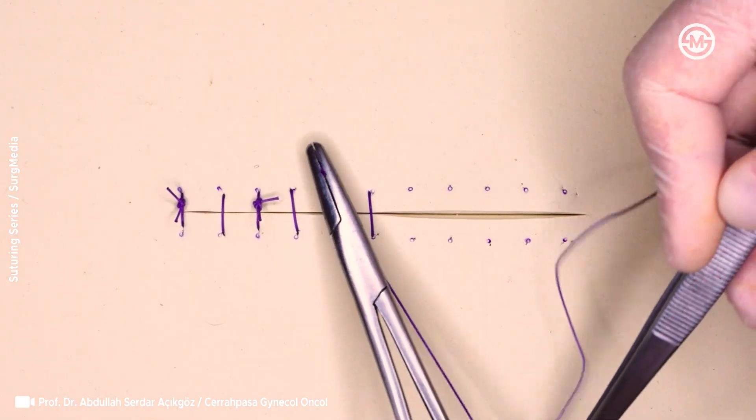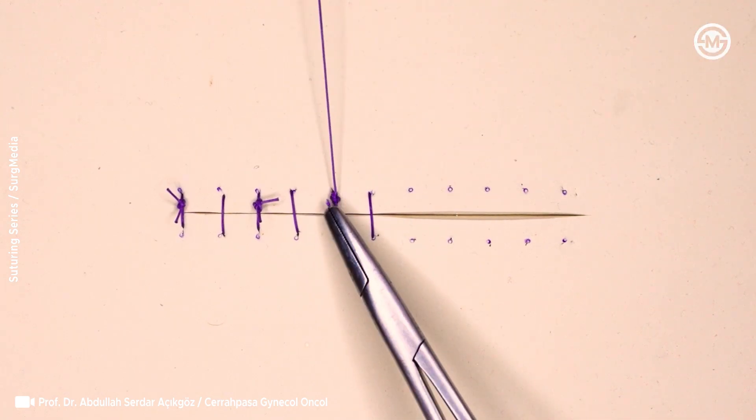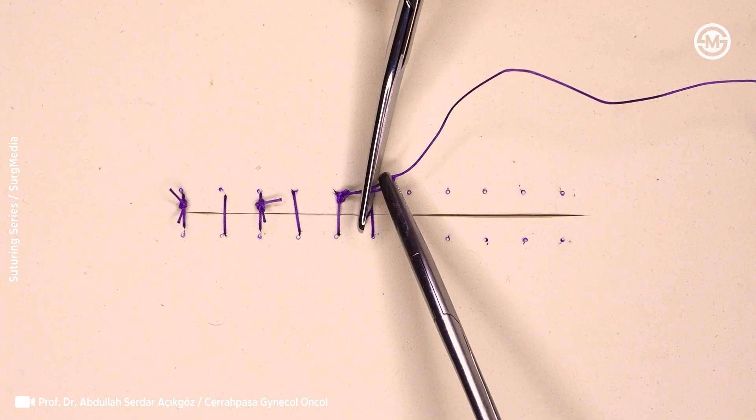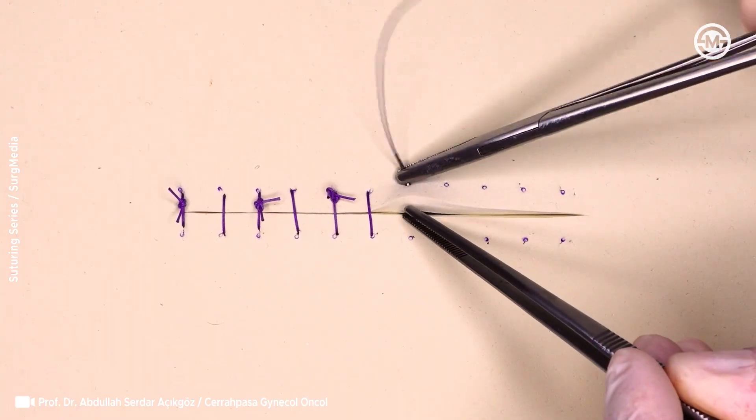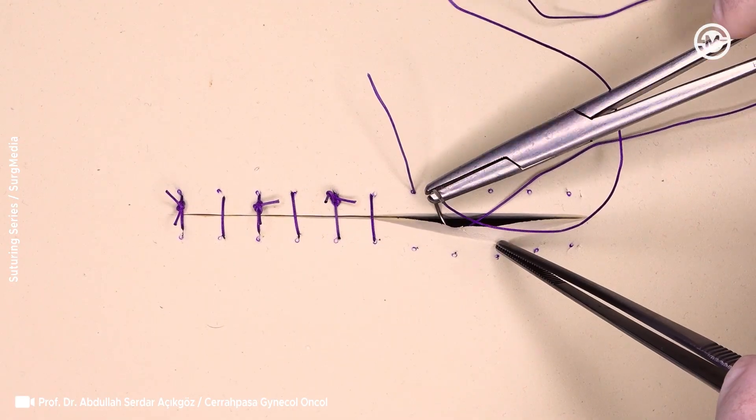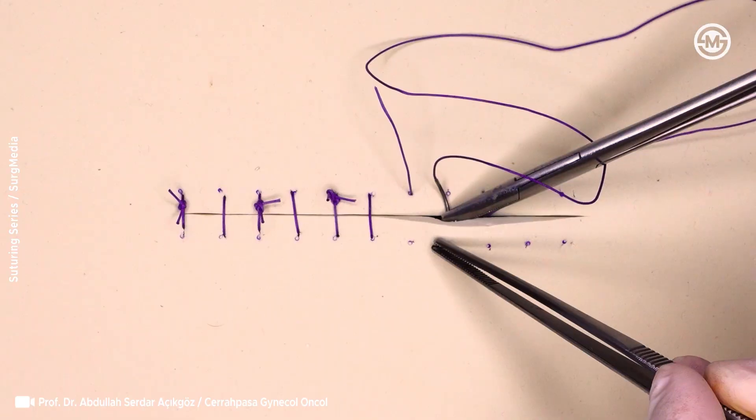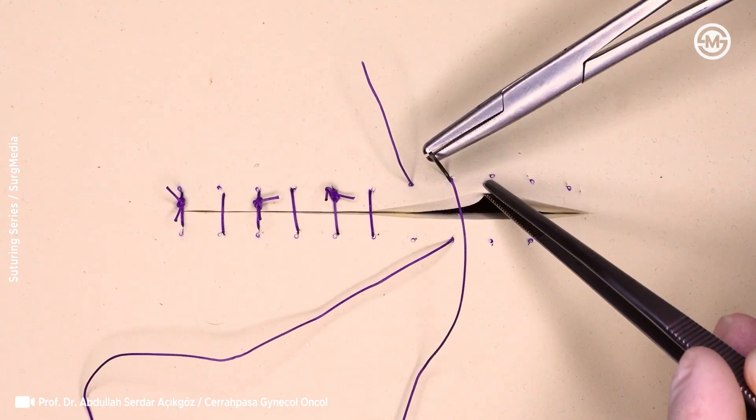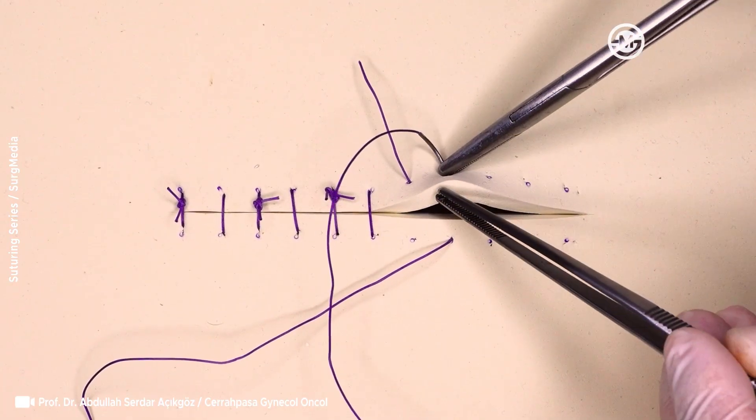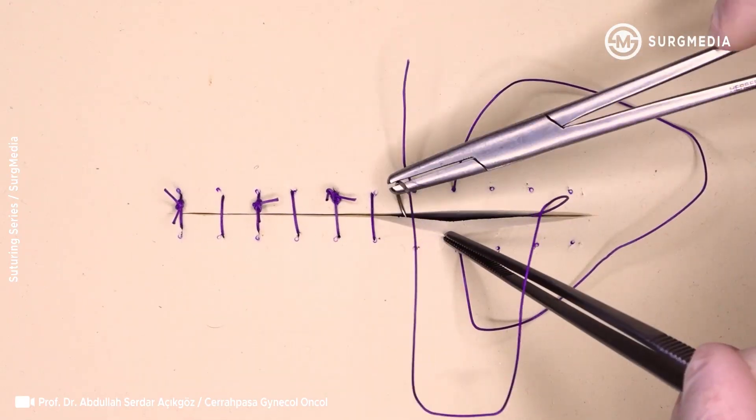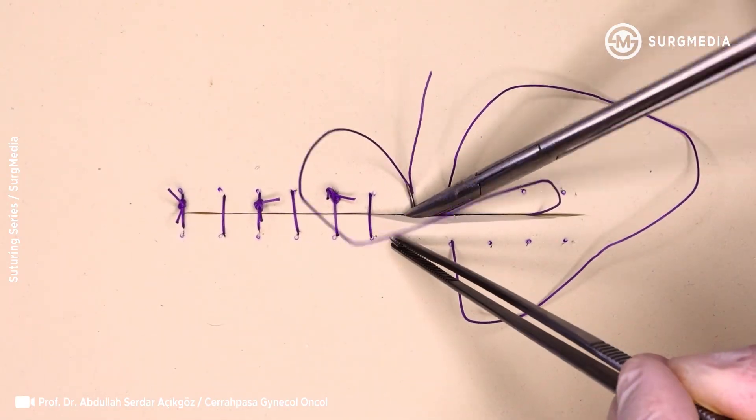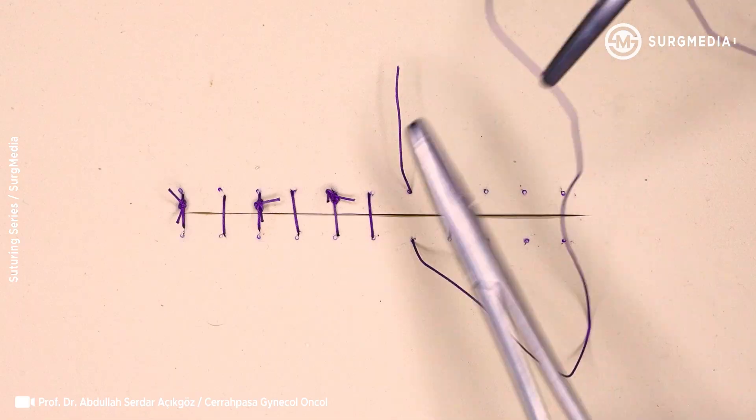This technique has been successfully used for years by both periodontists and surgeons. Plastic surgeons often favor the inverse figure of eight suture technique for its ability to minimize visible scarring and provide strong tissue support. Its buried configuration offers both functional strength and an improved cosmetic outcome, making it especially useful in procedures where aesthetics are paramount.